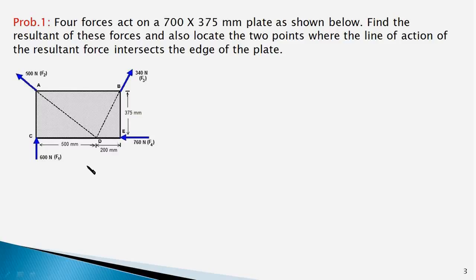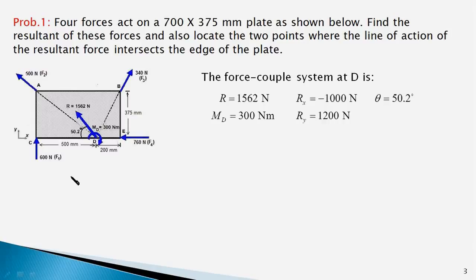As a first step, we should find the equivalent force-couple system acting at point D of the plate, but there is no need to do that again because in module 7.2, we already found the force-couple system wherein the resultant force R is 1562 Newton in magnitude, making an angle of 50.2 degrees with the minus x axis, and the resultant couple is 300 Newton meter in clockwise direction.